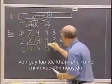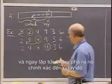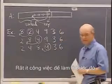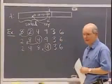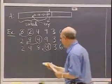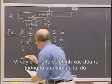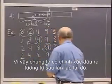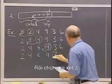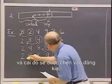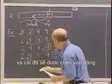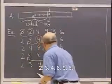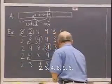Then we look at nine, and we discover immediately it just goes right there. Very little work to do on that step. We have exactly the same thing output after that iteration. Then we look at the three. That is going to be inserted over there: 2, 3, 4, 8, 9, 6.